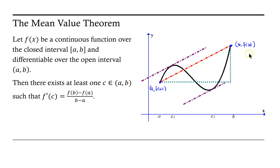Now, this line segment in red represents the secant line that connects the left endpoint of the function on the interval to the right endpoint of the function on the interval. This line segment has a slope — we'll call it the slope of the secant line.